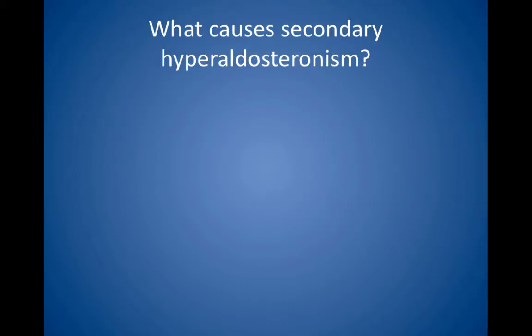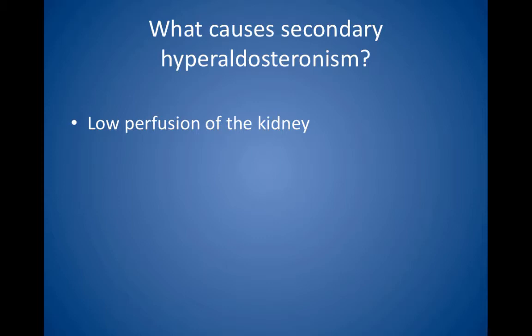What causes secondary hyperaldosteronism? Secondary hyperaldosteronism is much more common than primary disease. It occurs because of low perfusion of the kidney, as in congestive heart failure, renal artery stenosis, dehydration, nephrotic syndrome, and cirrhosis. The key mechanism is that the kidney senses hypoperfusion and secretes renin; therefore, the renin level is high. Treatment of the underlying disorder, if possible, resolves the hyperaldosteronism.